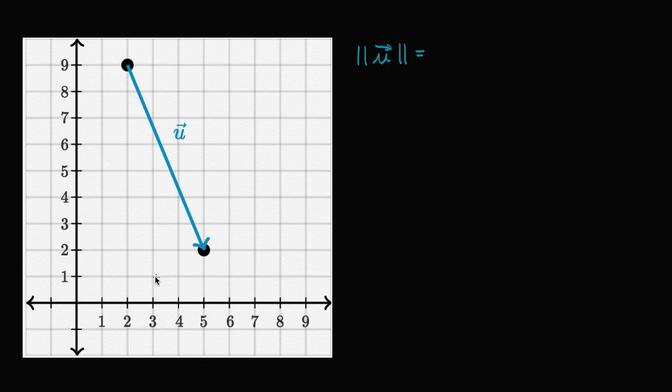You could think of it as the distance formula, which really comes straight out of the Pythagorean Theorem. It's going to be the square root of our change in x squared, plus change in y squared.